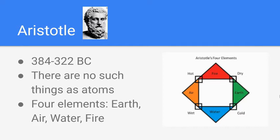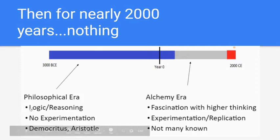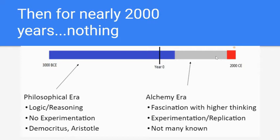Looking at the timeline, Democritus started thinking about the atom nearly 3,000 years ago. From antiquity up to the fall of Rome, it's this philosophical region — we're just thinking, talking, with no experimentation and no mass education to pass information forward. When Rome falls and the Middle Ages begin, even more knowledge is lost, but something fascinating pops up: alchemy.